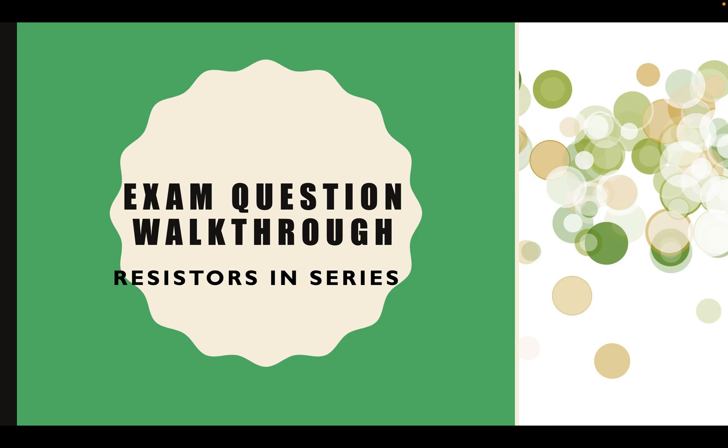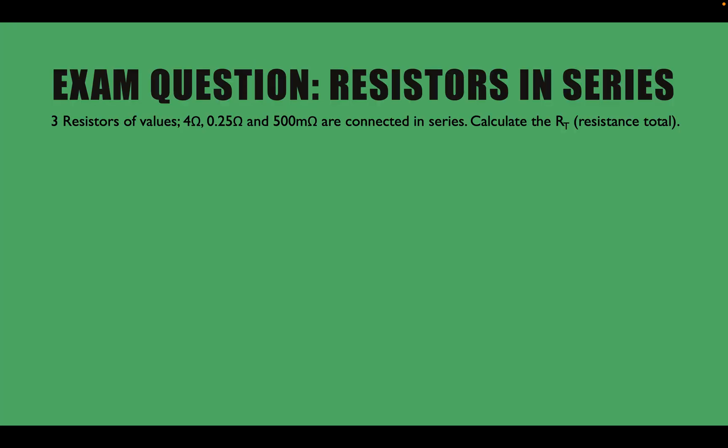So we're going to be calculating the total resistance. Here's an example question that we might be given of resistors in series. Three resistors of values 4 ohms, 0.25 ohms and 500 milliohms are connected in series. Calculate the resistance total.